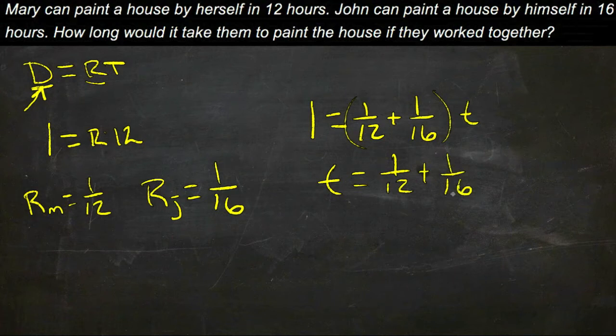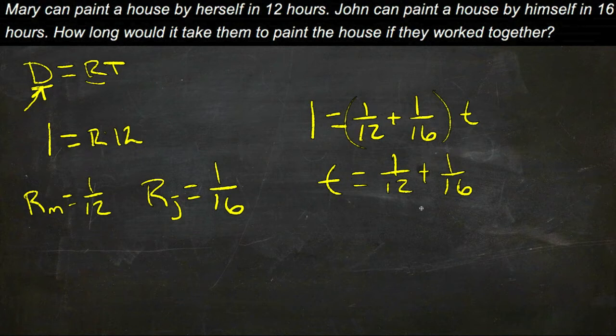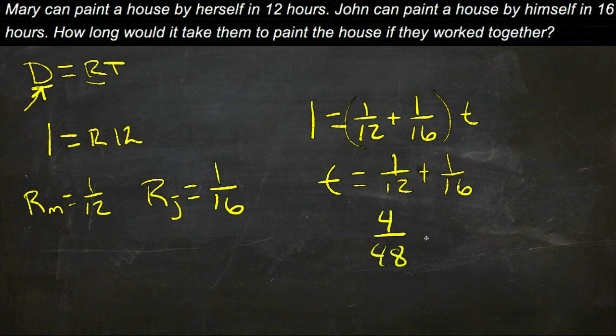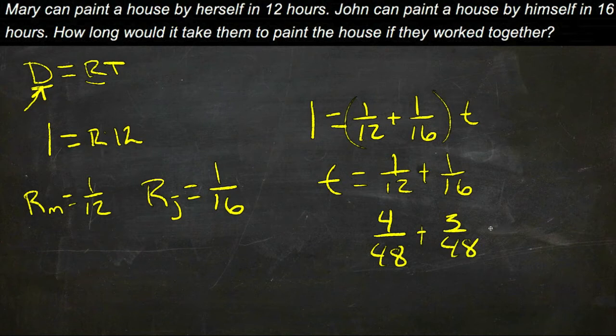We need a common denominator, so we're going to make the denominator be, what, 16, 32, 48? 48? Yep. So we can do 4/48 plus 3/48 would be 7/48.